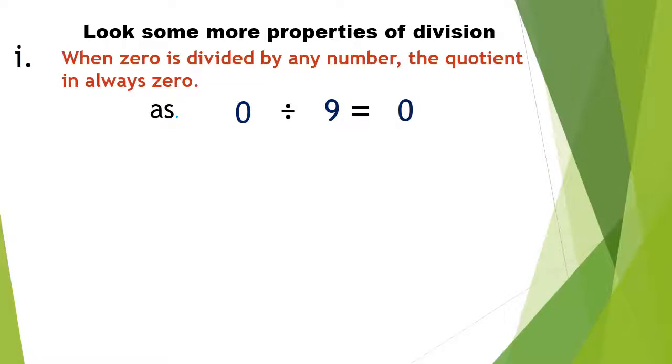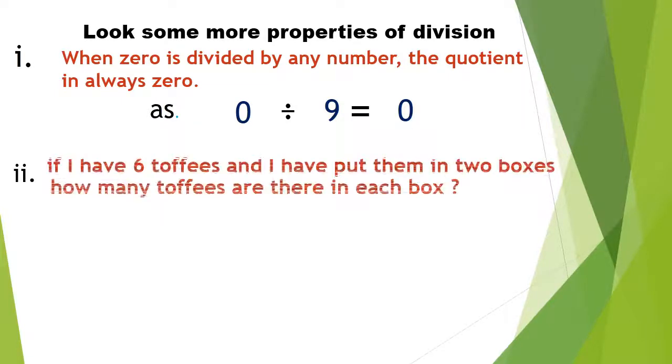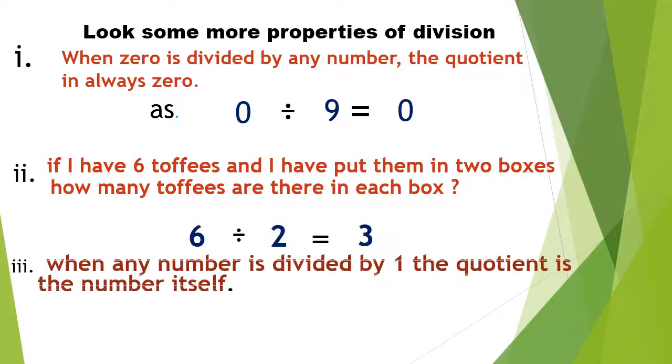Second property: if I have 6 toffees and I put them in 2 boxes, how many toffees are there in each box? We have to divide - 6 divided by 2 equals 3.